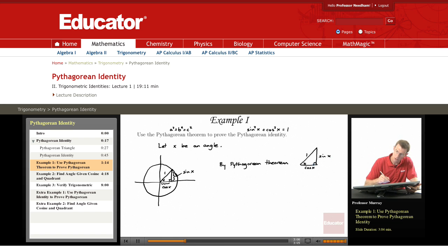By the Pythagorean Theorem, one side squared—let me write that first of all as cosine x squared—plus the other side squared is equal to 1 squared, that's the length of the hypotenuse.